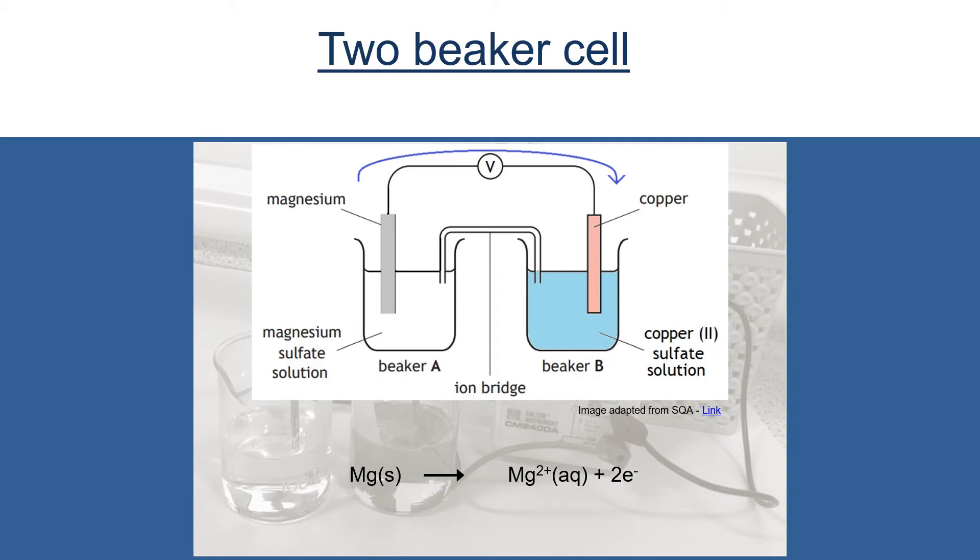Here we have magnesium solid becoming magnesium 2+ ions and giving away two electrons. This equation can be found on page 10 of your data booklet although you'll notice it's back to front. That's because all of the equations on page 10 are reduction reactions. This is our oxidation ion-electron equation, and a reminder that oxidation is a loss of electrons.